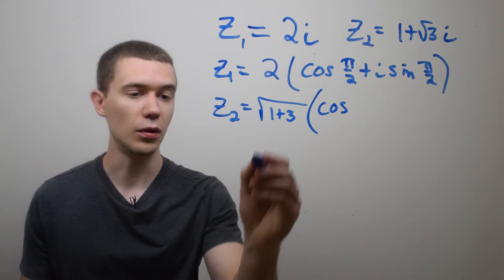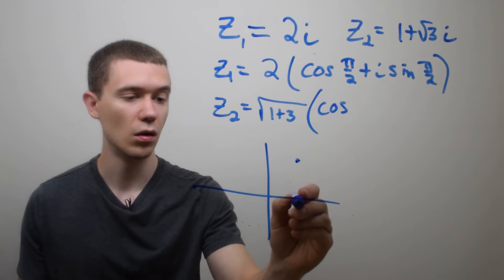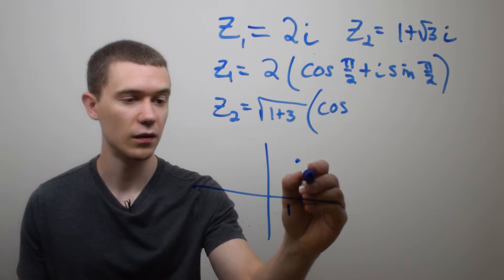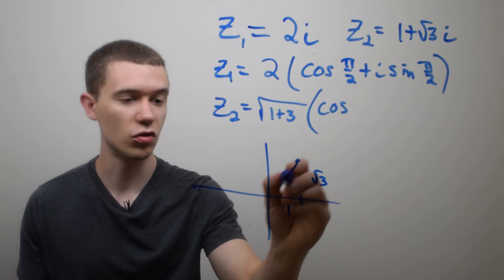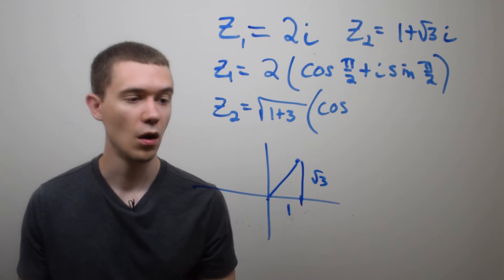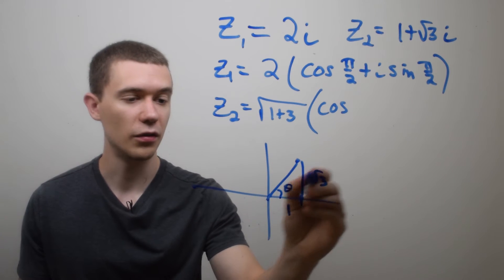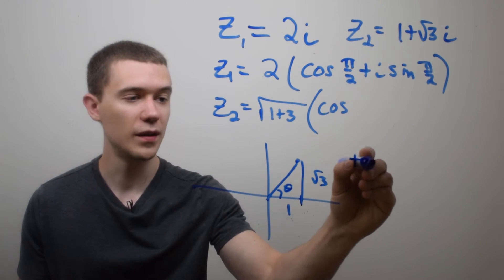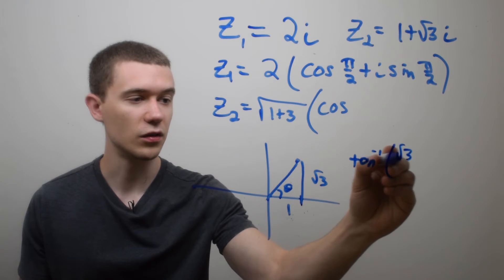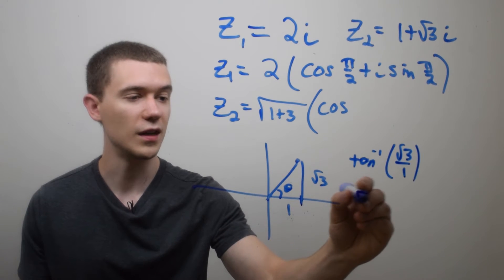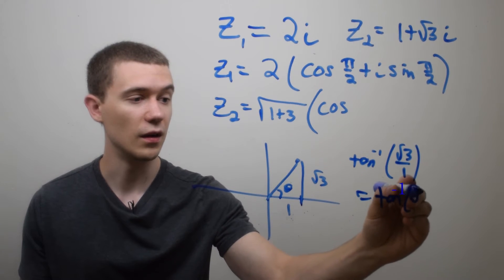And now maybe you have to think a little bit. If I plotted this point, 1, √3, this triangle that I'm making here, and this would be my angle θ, what would be the tangent inverse of √3 over 1 or the same as tangent inverse of √3?